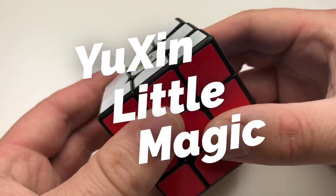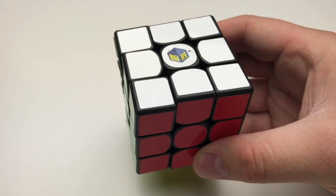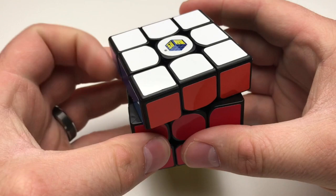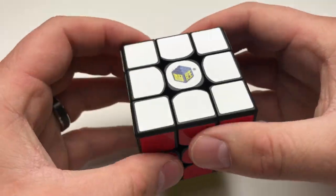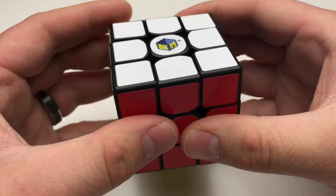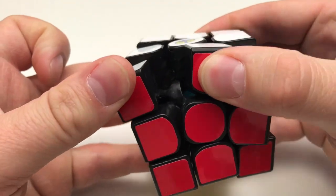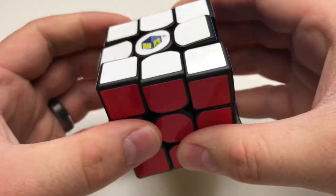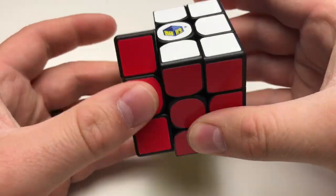All right, so I have here the Yushin Little Magic. So initially, I gave this puzzle a poor review. After working through the puzzle a bit, I realized it's actually an incredible buy for $4.99. It's pretty stable. Piece separation is great. Corner cutting is actually right at that 45-degree mark, possibly even past it at the 50-degree mark.